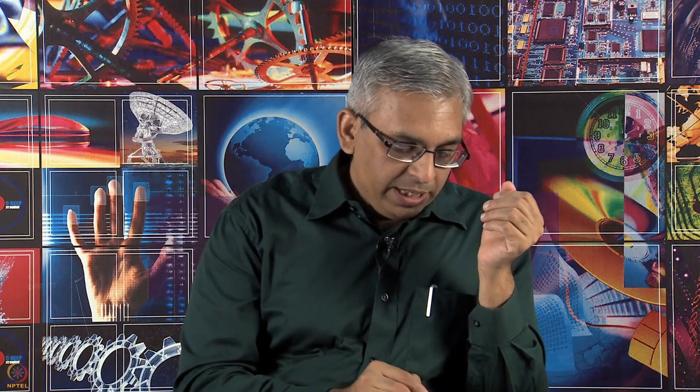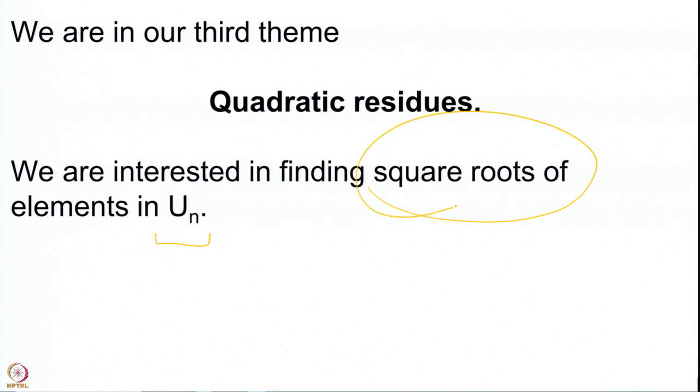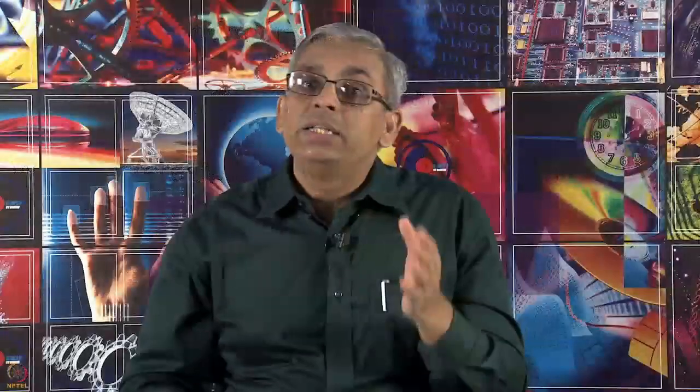What we are restricting ourselves to at the moment is that we will look at elements which are invertible — these are elements in U(n) — and we want to compute square roots of these elements. U(n) is a group; Z/nZ is a ring, and therefore U(n), the set of all invertible elements modulo n, forms a group under multiplication.